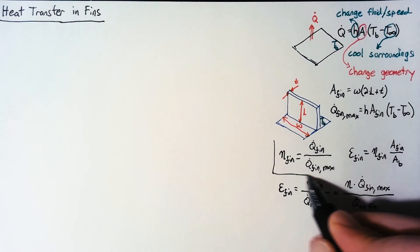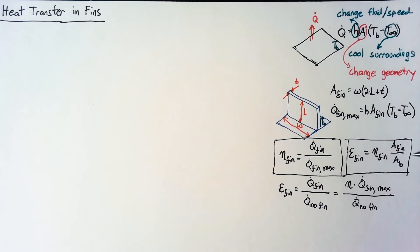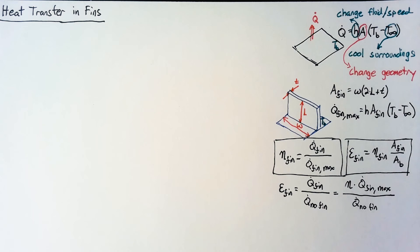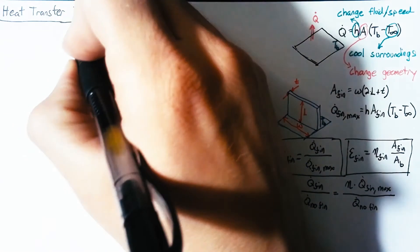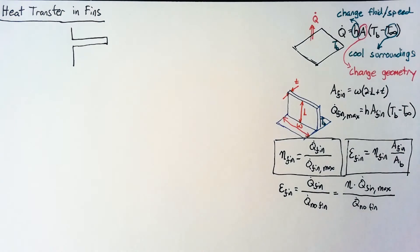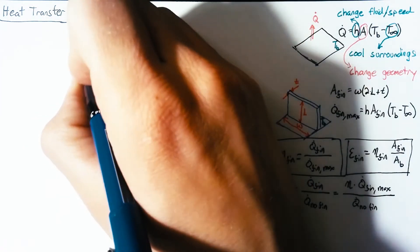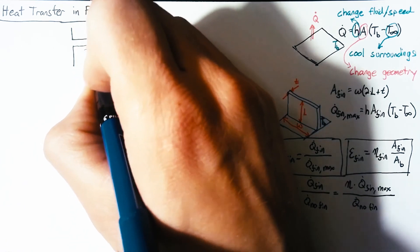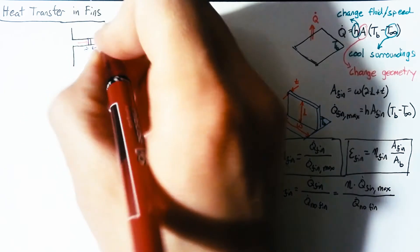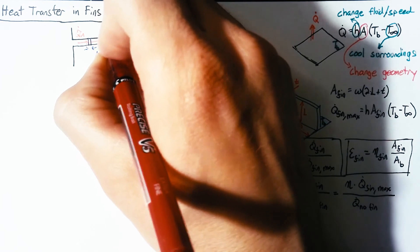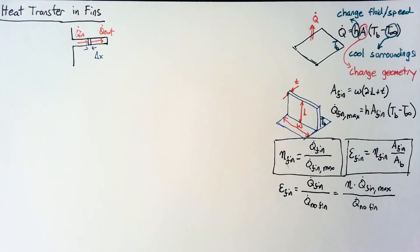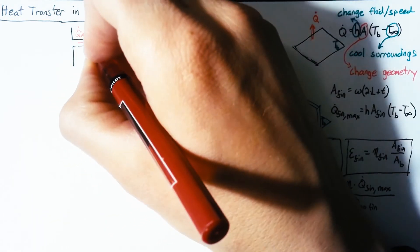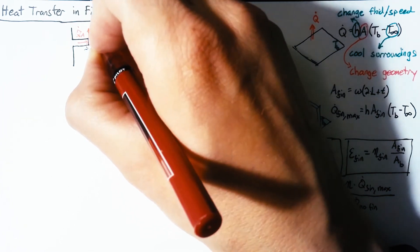We can't do anything with these until we define what q-dot of the fin actually is. So our next step is to look at the fin itself, see how the temperature changes, and see how that affects the convective heat transfer rate. Let's draw a quick picture of the fin from the side. If we cut a little section of our fin, that section has some delta-x, and into it we have some q-dot in and leaving it some q-dot out. The difference from 1D conduction is that alongside those, we also have a convective heat transfer out of the fin in that slice.